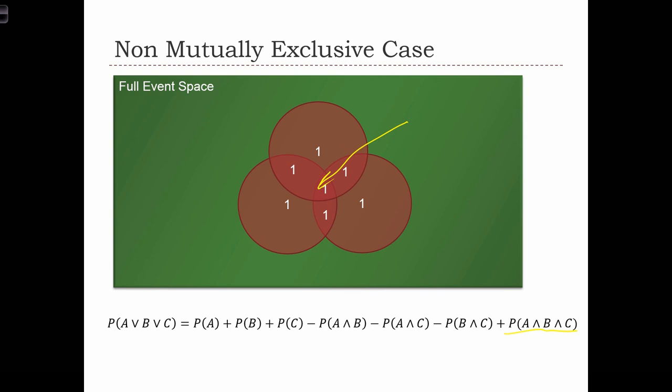So now we can see that because these events were not mutually exclusive, we couldn't just use the simple addition rule. We had to correct for all of the overlapping intersections by removing the binary intersections, the two-way intersections, and adding in the three-way.